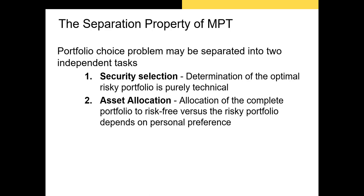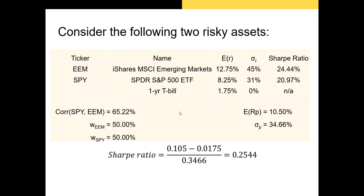The downside to the asset allocation step is that it's very hard to estimate someone's personal risk aversion level. So when we talk about Modern Portfolio Theory, the first step is very mechanical, while the second step has some empirical issues with it. Now let's use some data to illustrate Modern Portfolio Theory.